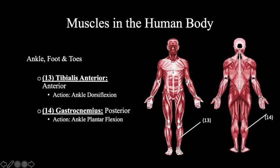Finally, there are two muscles in the ankle, foot, and toe region. The first is the tibialis anterior, located on the anterior side of the body, responsible for ankle dorsiflexion — basically bringing your toes towards your shin. And lastly, the gastrocnemius, located on the posterior side of the body, is responsible for ankle plantar flexion. This is also known as the larger of the two calf muscles.